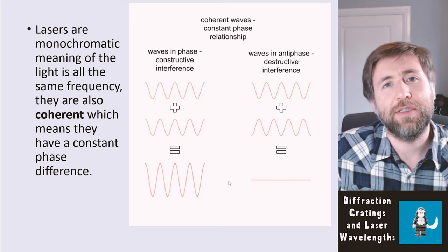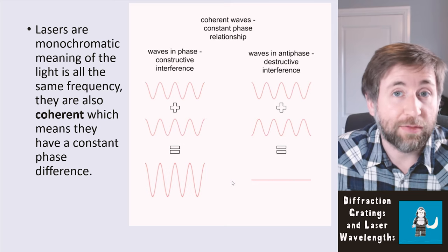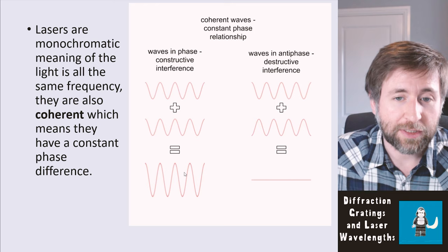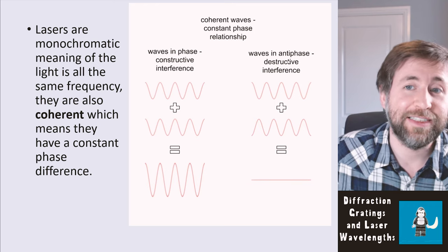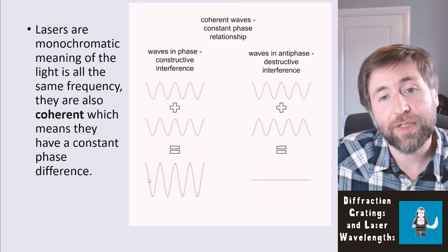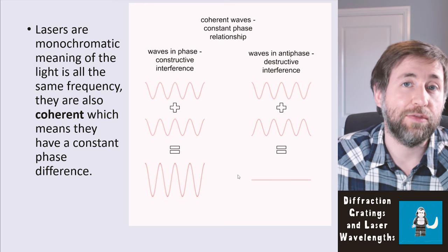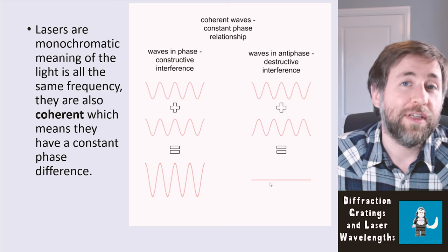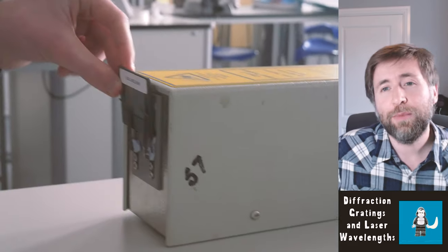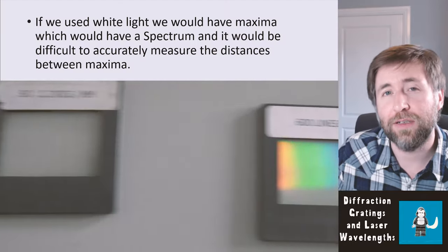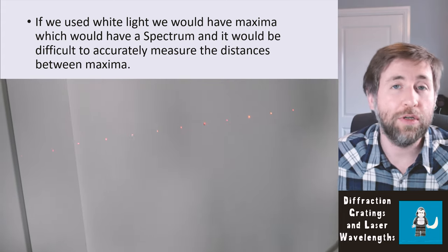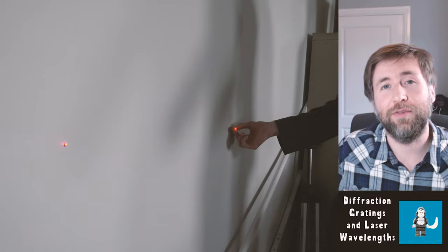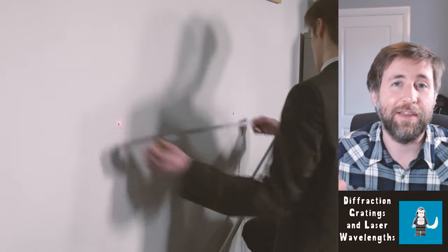We use lasers because they produce monochromatic light — light of a single frequency — and are therefore coherent, meaning they have a constant phase relationship. Coherent waves in phase produce constructive interference; waves in anti-phase produce destructive interference. On the screen we see bright spots where waves arrive as multiples of the wavelength path difference, and dark regions where they arrive as odd multiples of half a wavelength. With white light you'd get maxima for different colours, making the spots hard to identify accurately.